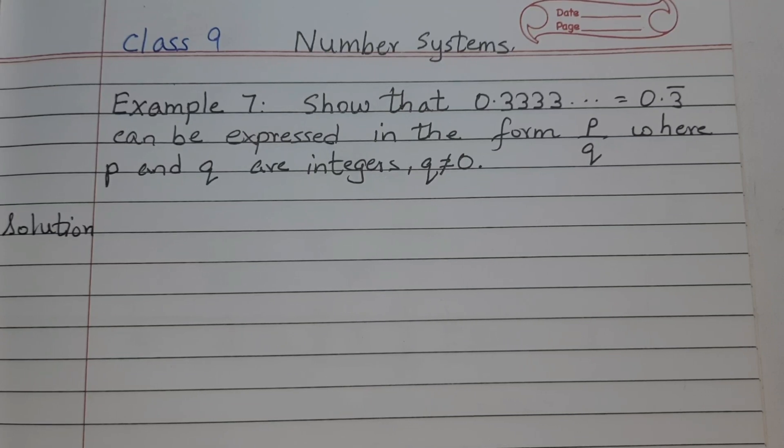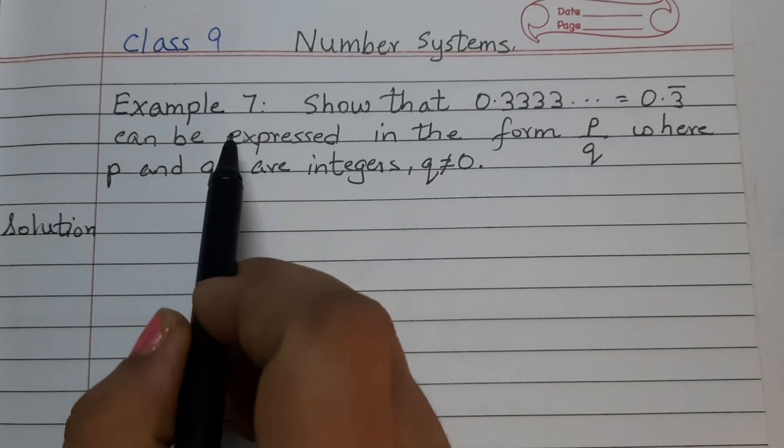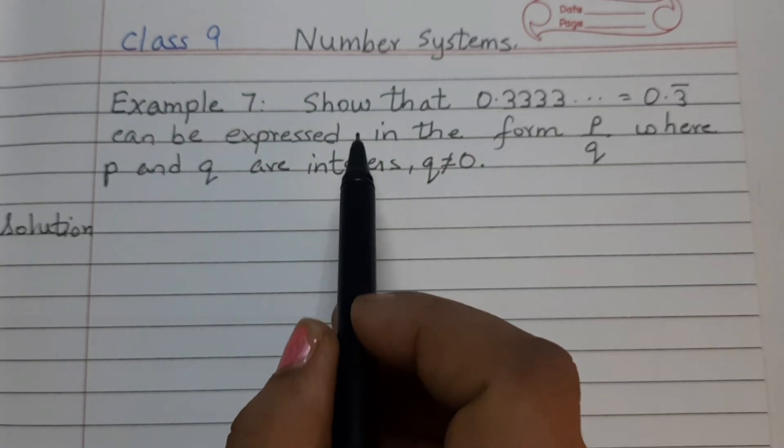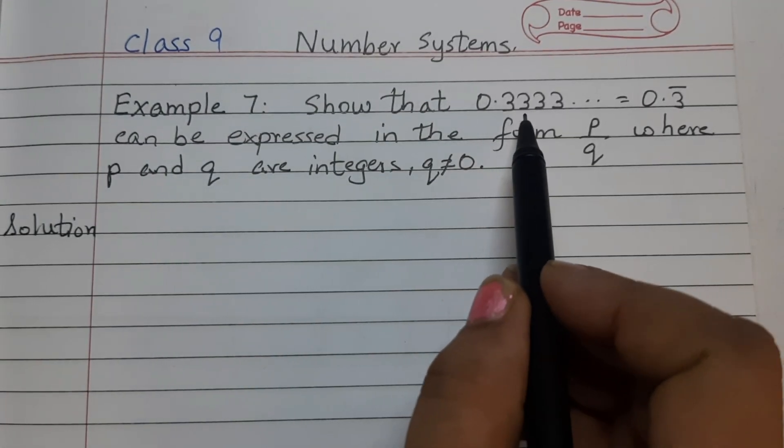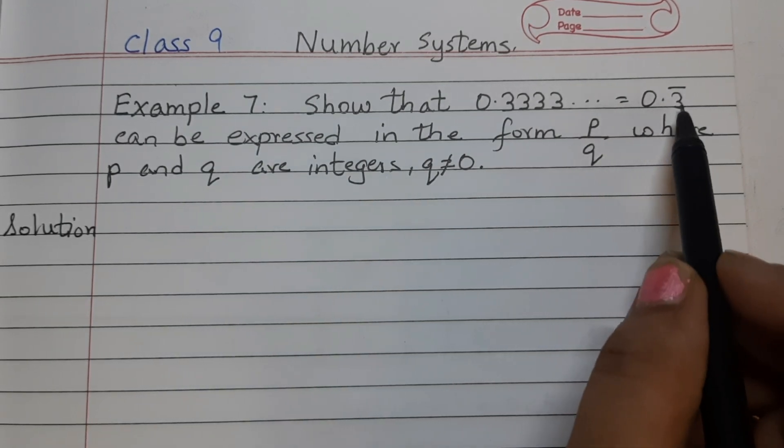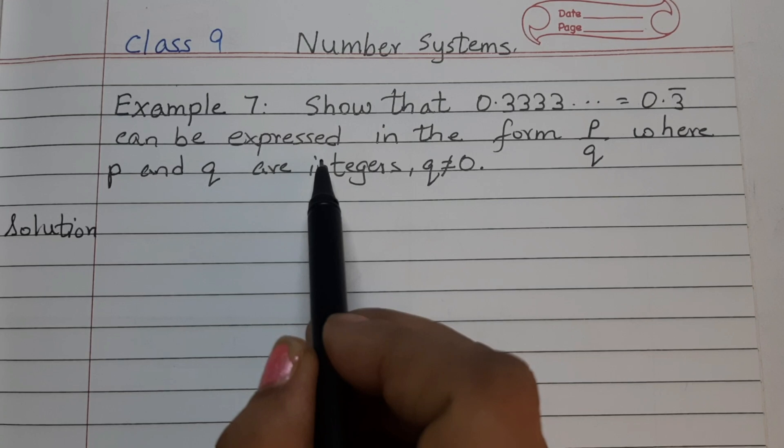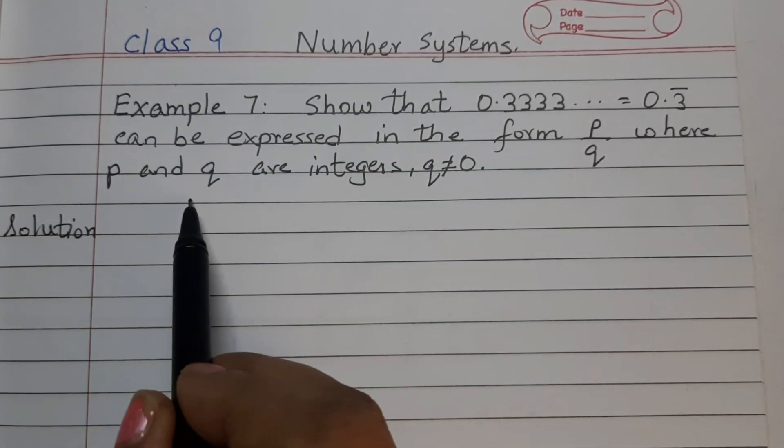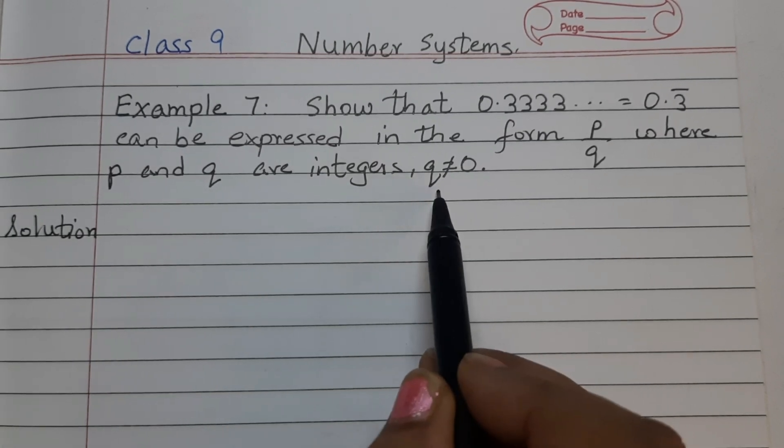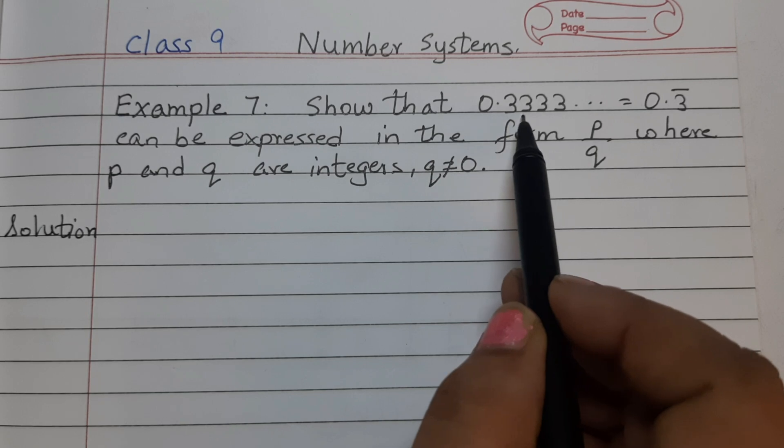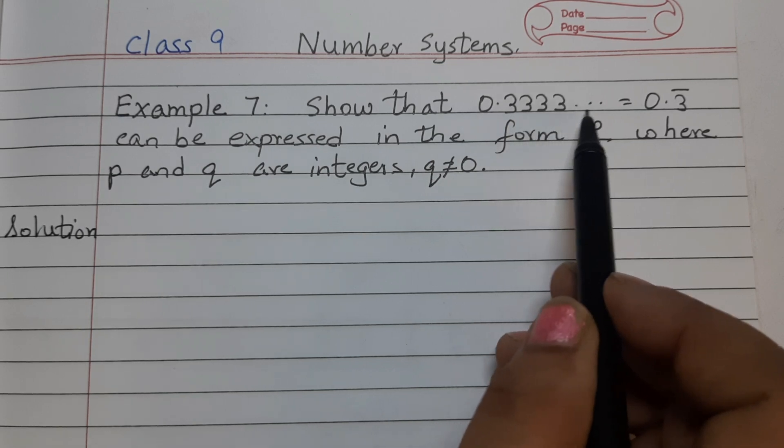Hello everyone, in this video we shall discuss example 7 of chapter number 1, number systems. Show that 0.3333 dot dot dot equals to 0.3 bar can be expressed in the form p by q, where p and q are integers and q is not equal to 0.